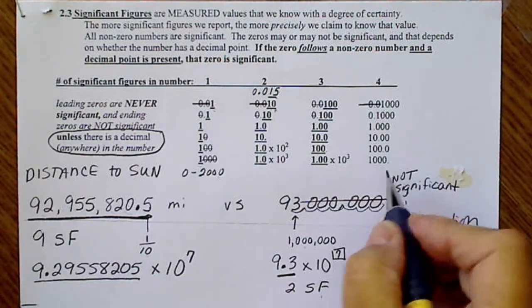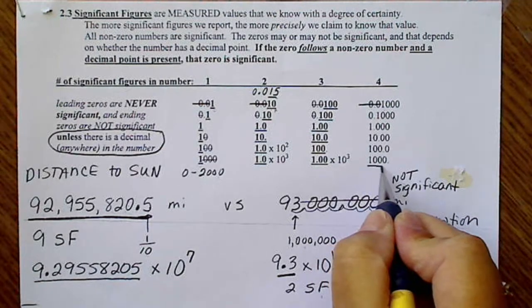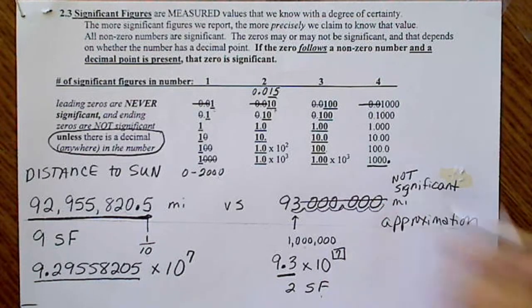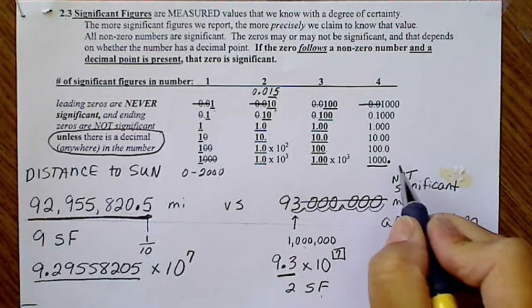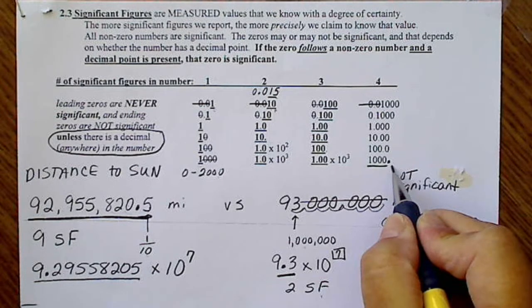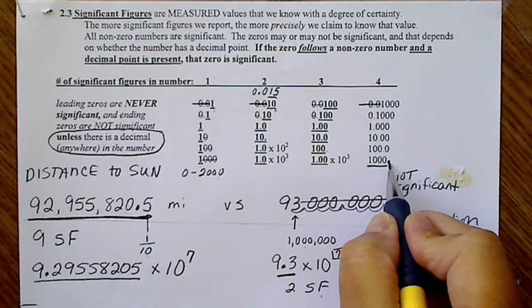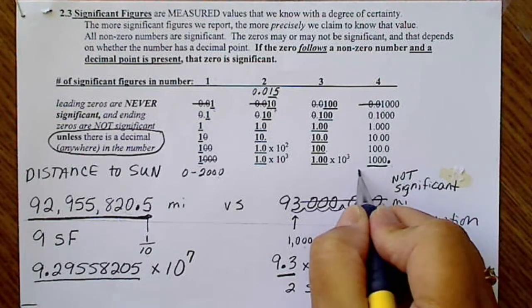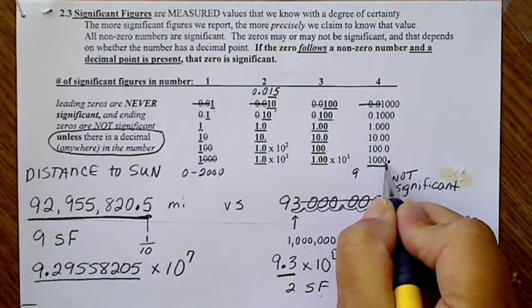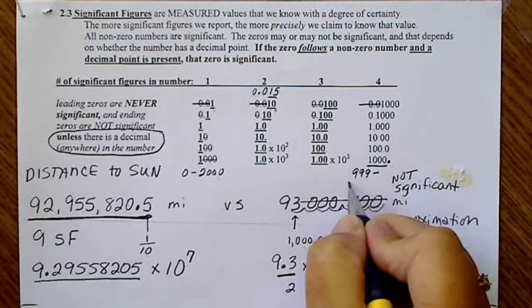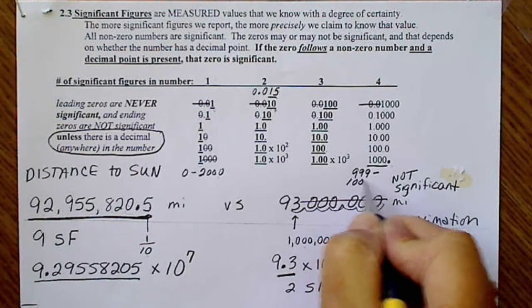If we want to report the number 1,000 to four significant figures, we would actually place a decimal at the end of that number. That looks really silly to have a whole number with a decimal place after it. But placing that decimal there automatically means that we know this number down to the ones place. So this value is somewhere between 999 and 1,001.